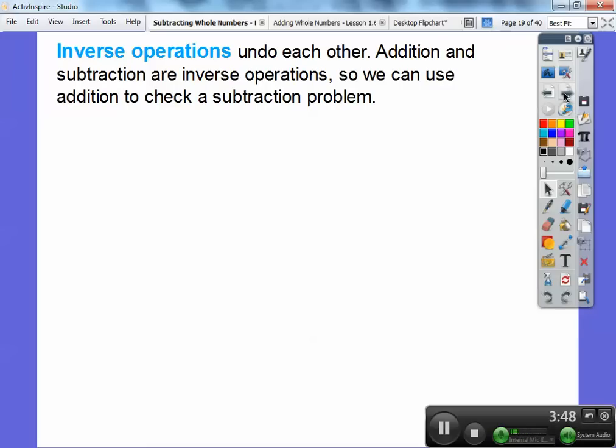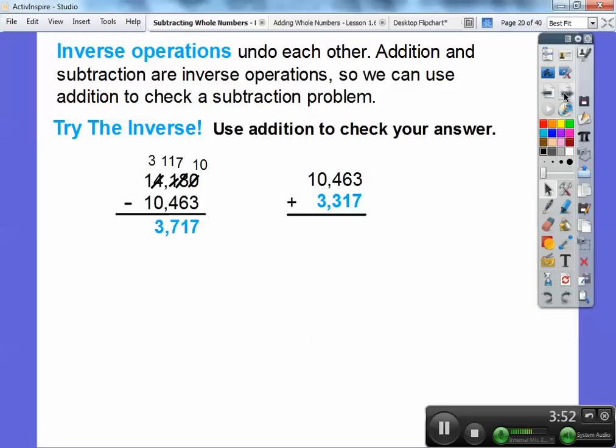We can use addition to check our subtraction problem. I'm going to do the inverse. When I subtracted 14,180 and subtracted 10,463, I got 3,717. If I take these two numbers and add them, it should get me 14,180.